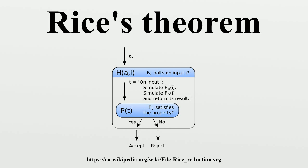As an example, consider the following variant of the halting problem. Let P be the following property of partial functions F of one argument: P means that F is defined for the argument 1. It is obviously non-trivial, since there are partial functions that are defined at 1, and others that are undefined at 1. The one halting problem is the problem of deciding of any algorithm whether it defines a function with this property, i.e., whether the algorithm halts on input 1. By Rice's theorem, the one halting problem is undecidable. Similarly, the question of whether a Turing machine T terminates on an initially empty tape is still undecidable.